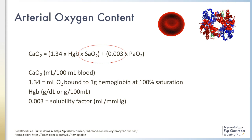Let's break down this equation. 1.34 is the amount in milliliters of oxygen bound to 1 gram of hemoglobin at 100% saturation. If you read around in the literature, you may see varying numbers used here. I've seen 1.34 and 1.39. 1.39 is the theoretical capacity of hemoglobin, but 1.34 is the measured capacity, which is why we use that in this module.